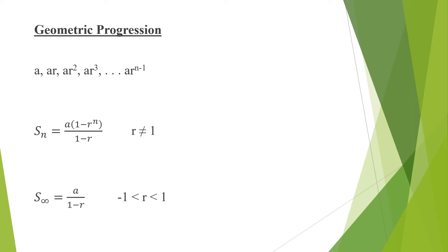The first term is a, and the second term is ar. Notice that these have a common ratio of r — this number divided by this number is simply equal to r. Again, this number divided by this number gives a common ratio of r, and again this number divided by this number gives a common ratio of r.